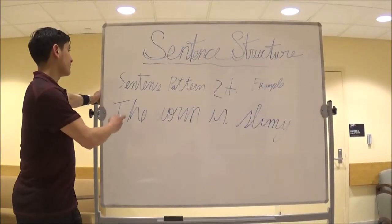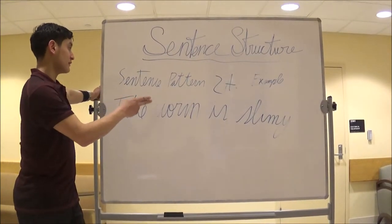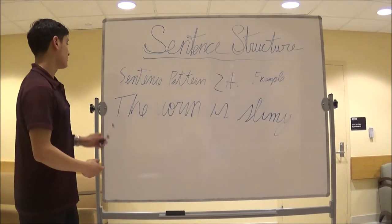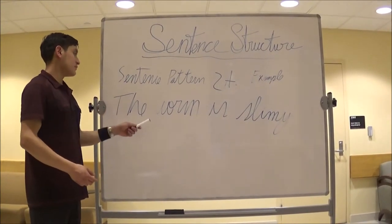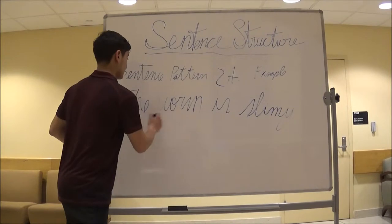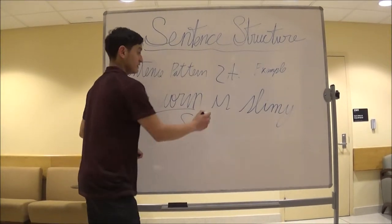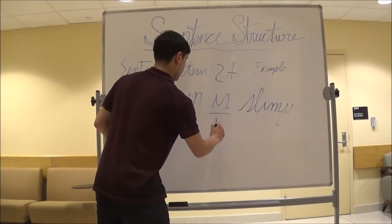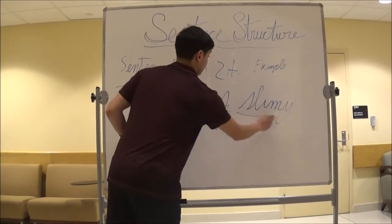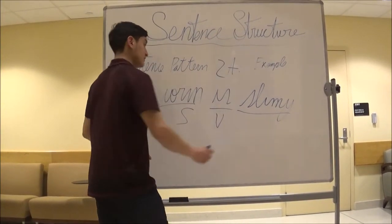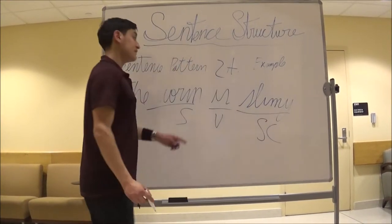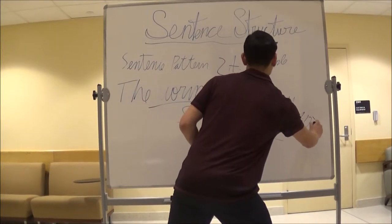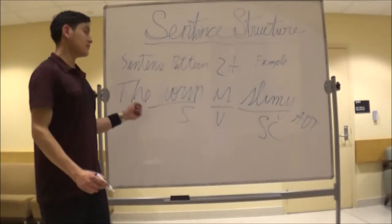For sentence pattern 2a, the example is: the worm is slimy. The worm is the subject — we're going to underline this. The verb is in the form of to be, and slimy is the subject complement. It's an adjective because it describes the worm.